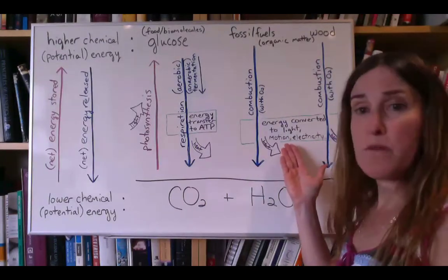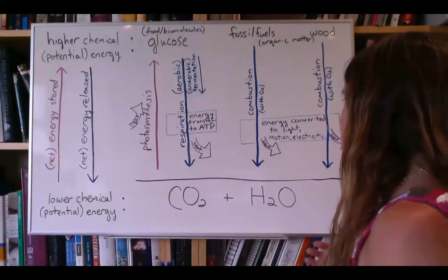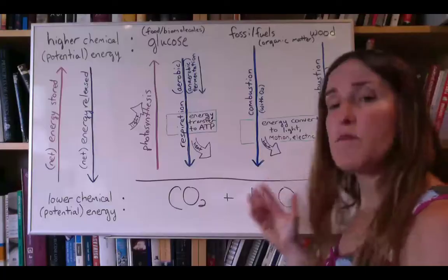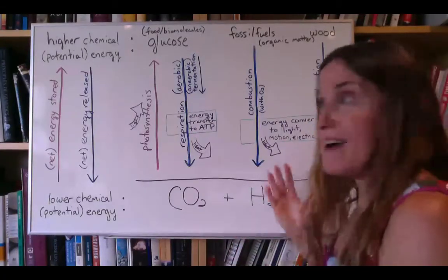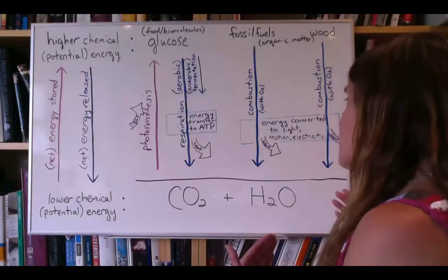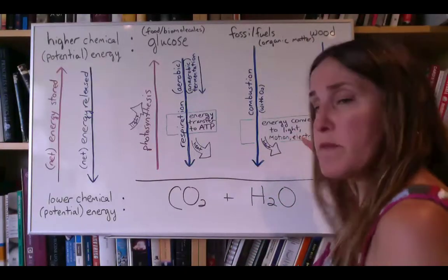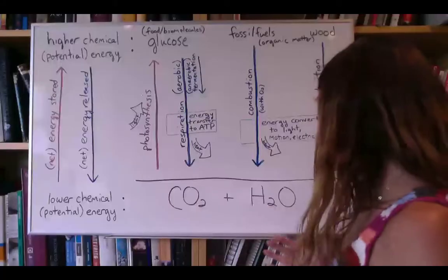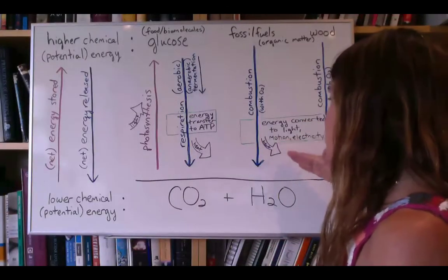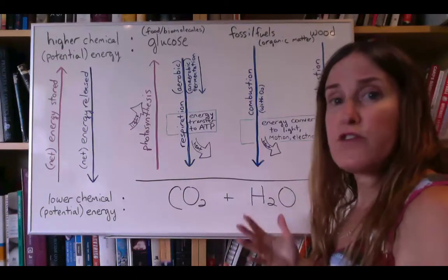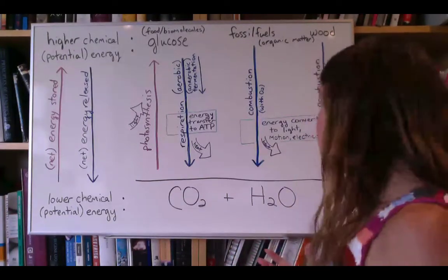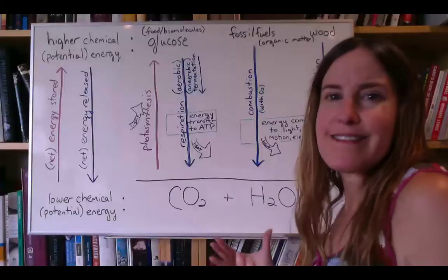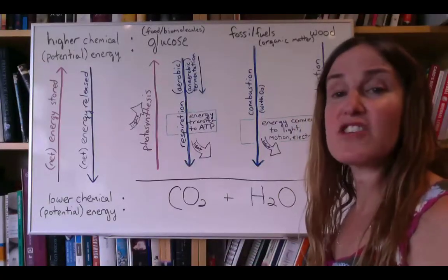Ultimately, that energy is converted into motion. The energy can also be used to turn a turbine and produce electricity—maybe heating water so that steam turns a turbine. In all of those cases, some of the energy is being converted into the form that we desire, whether that's moving the car or producing electricity to light our homes. But some of the energy is released as heat, and that heat is essentially lost to the system—it's not helping the car move down the road.